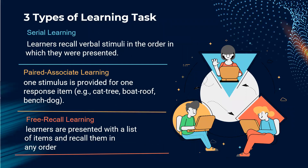There are three types of verbal learning tasks: serial learning, paired associate learning, and free recall learning. In serial learning, learners recall verbal stimuli in the order in which they were presented. In paired associate learning, one stimulus is provided for one response item. In free recall learning, learners are presented with a list of items and recall them in any order.